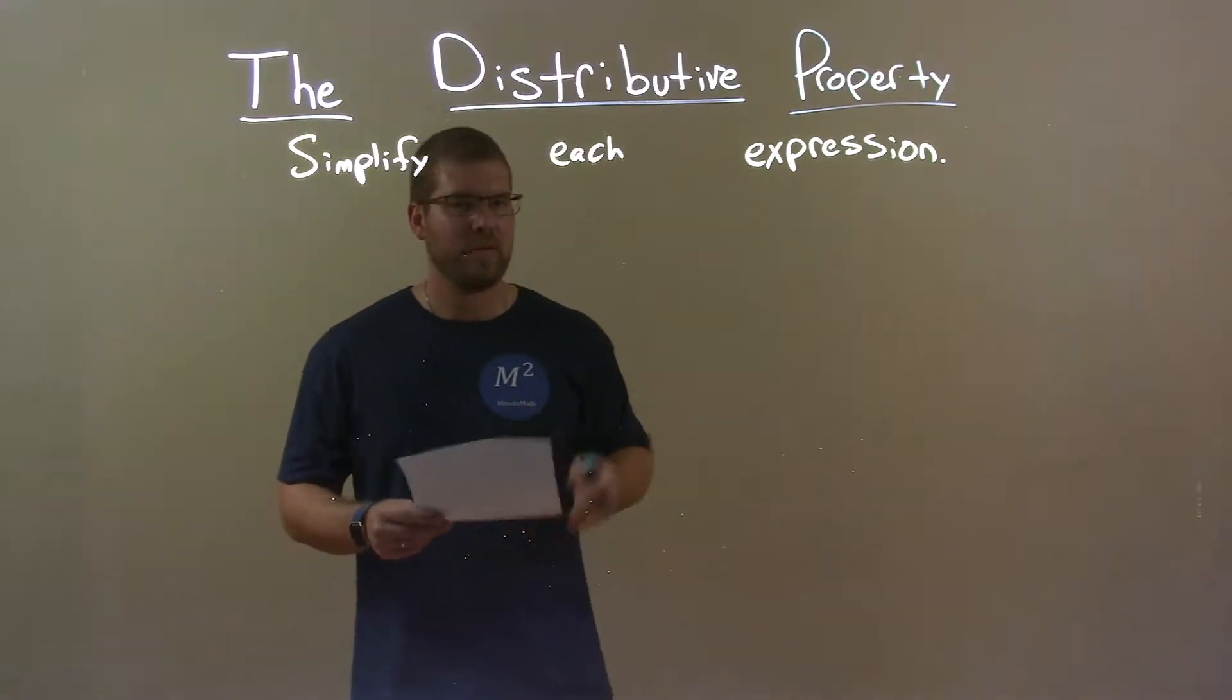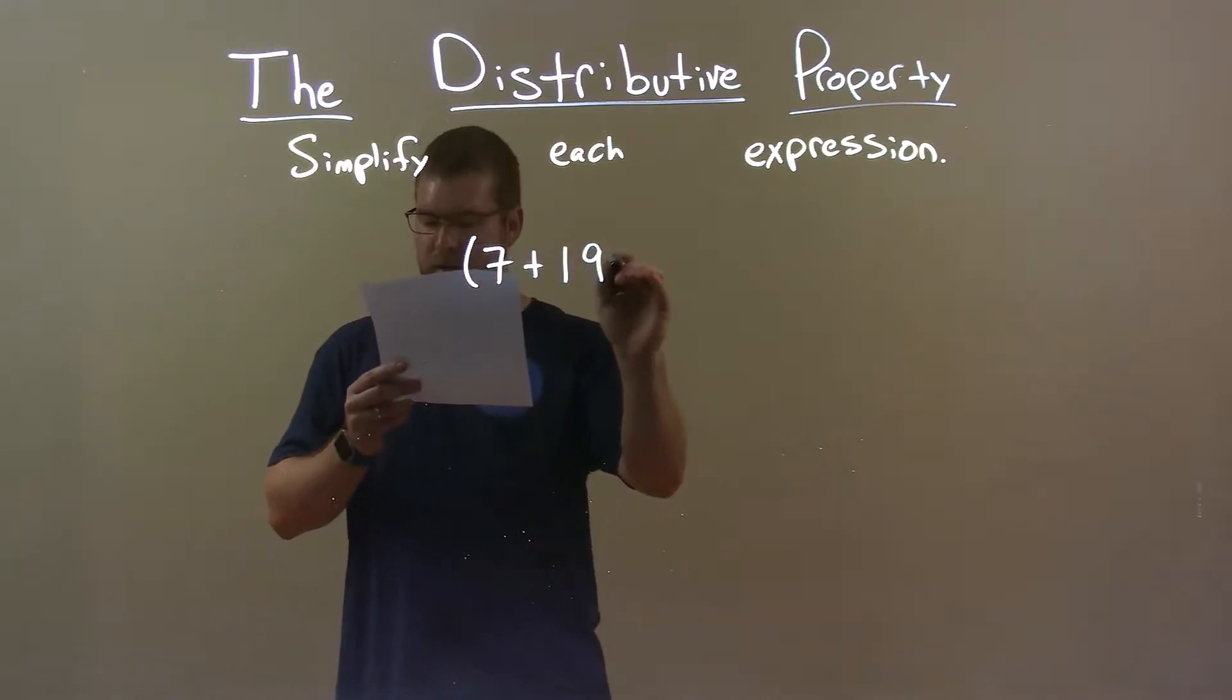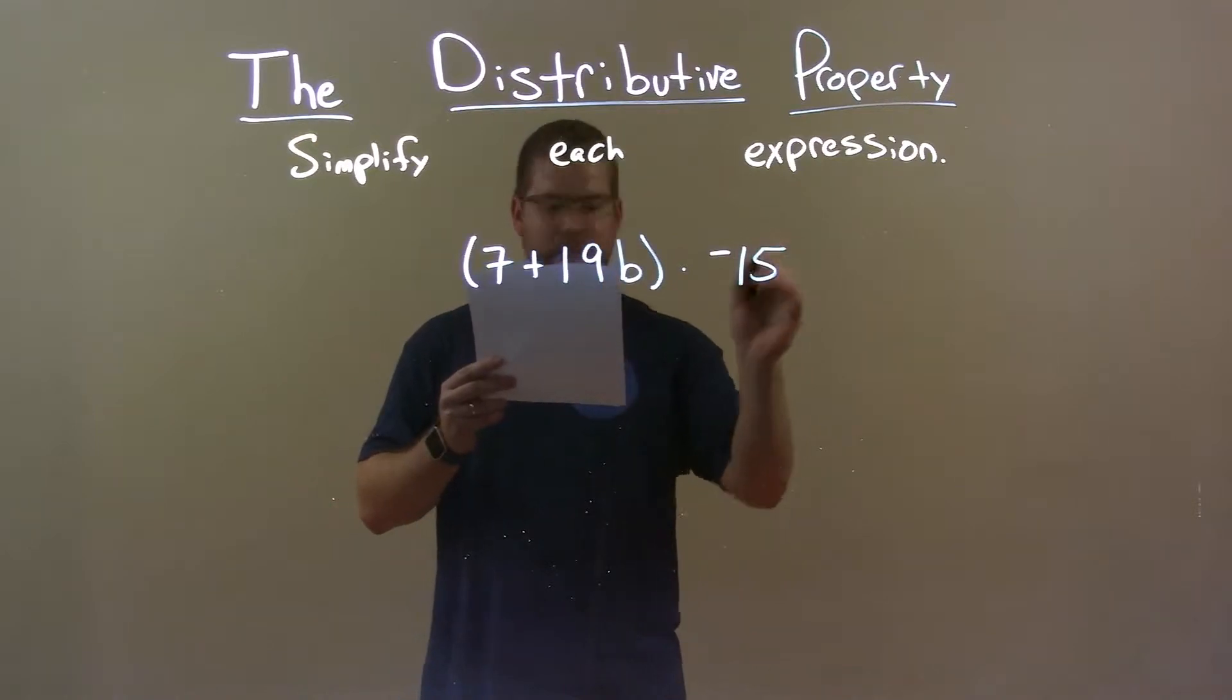So if I was given this expression, 7 plus 19b times a negative 15.